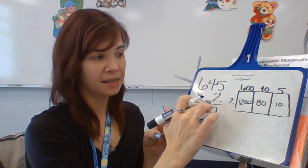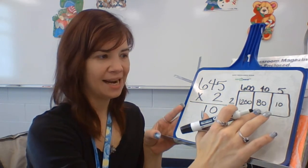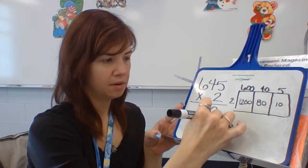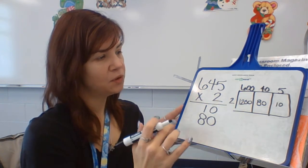Well, 4 times 2 is 8. We don't see an 8, but there's an 80. And then the last one's 1,200.